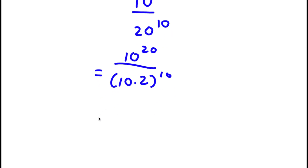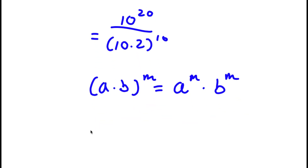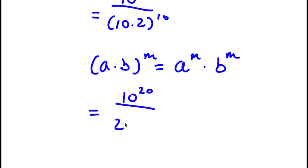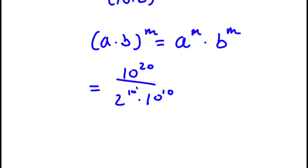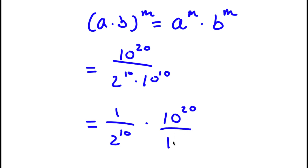Using the rule that a times b to the power of m equals a to the power of m times b to the power of m, the denominator becomes 2 to the power of 10 times 10 to the power of 10. This is the same as 1 over 2 to the power of 10, times 10 to the power of 20 over 10 to the power of 10.